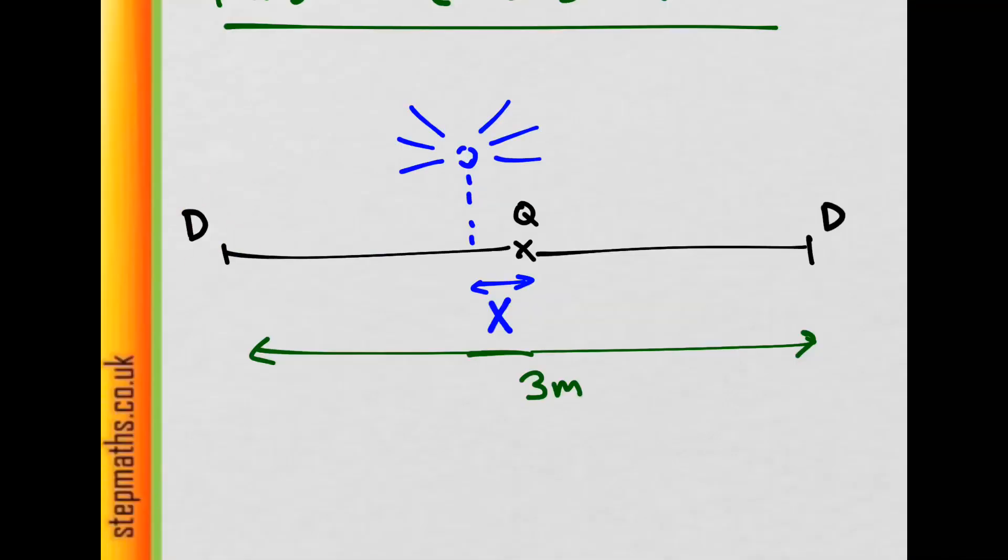So we have two detectors and this is a body of a patient and a point in the middle. There's a radioactive substance somewhere in his body, a distance x from this point q, and this is emitting radiation which the detectors detect.